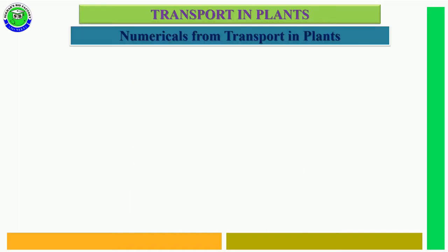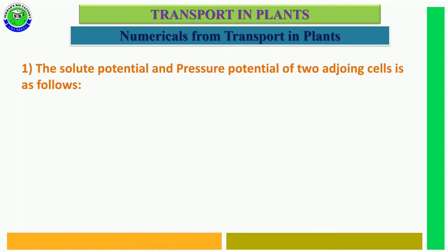In this video, I am going to explain the numericals from the Transport in Plants chapter. The first question is: the solute potential and pressure potential of two adjoining cells is as follows.